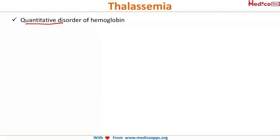On the other side, whenever there is a structural abnormality in the synthesis of the hemoglobin, it is called a qualitative disorder, and the common example is sickle cell anemia.